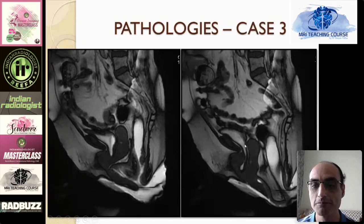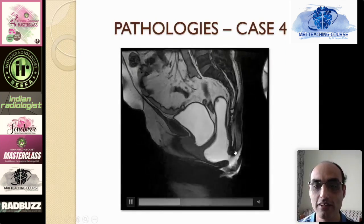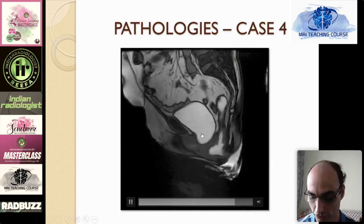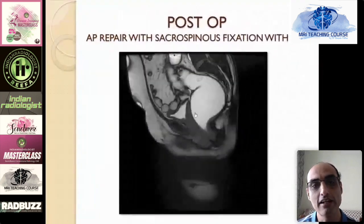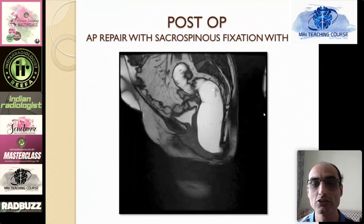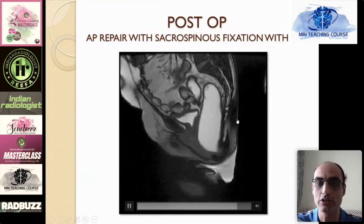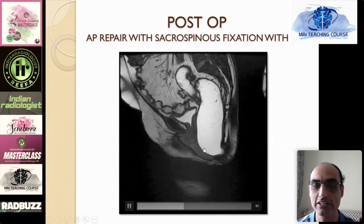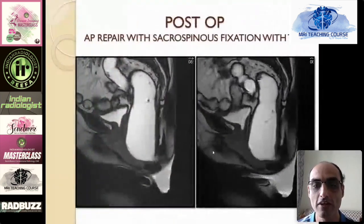This next case highlights the advantage of the Fiesta MR defecogram. There is some intussusception, but more importantly there is a rectocele and also vault and bladder descent — all going well below the pubococcygeal line. On the static images you can see the PC line, the vault tissue between the bladder and the rectum, and significant descent of all compartments. This patient underwent an anteroposterior repair with sacrospinous fixation and a transobturator tape. On the post-operative MR defecogram, the bladder and vault remain in position and the rectocele and intussusception are no longer seen, showing significant imaging and clinical improvement.